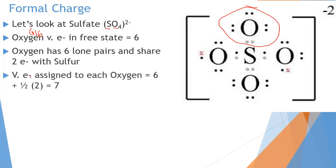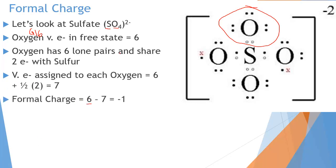Setting up the formal charge equation: I take the number from the periodic table, which is six, minus the amount of electrons assigned to it in the compound. Oxygen is assigned six lone electrons plus half of the shared pair. Half of two is one. So in the molecule I have six lone electrons plus one, giving me seven total electrons assigned. Formal charge equals six minus seven, which is negative one. So the formal charge of oxygen in this compound is negative one.